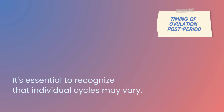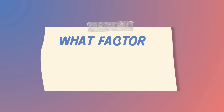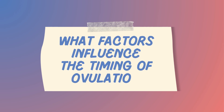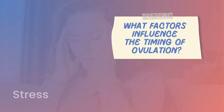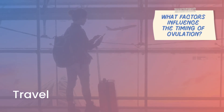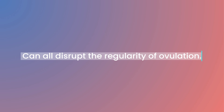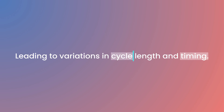However, it's essential to recognize that individual cycles may vary. Factors such as cycle length and hormonal fluctuations can influence the timing of ovulation. Stress, illness, travel, and hormonal imbalances can all disrupt the regularity of ovulation, leading to variations in cycle length and timing.